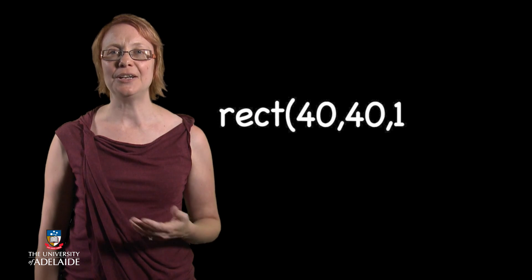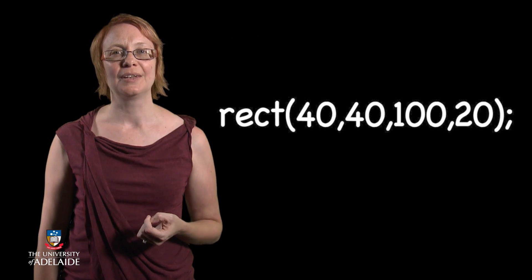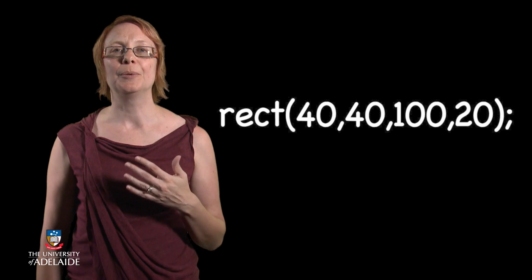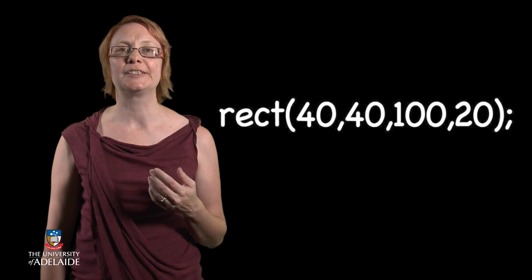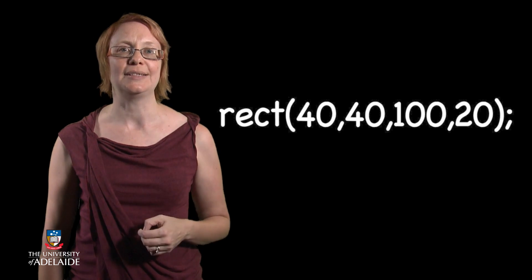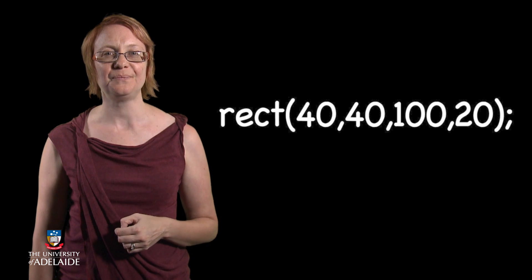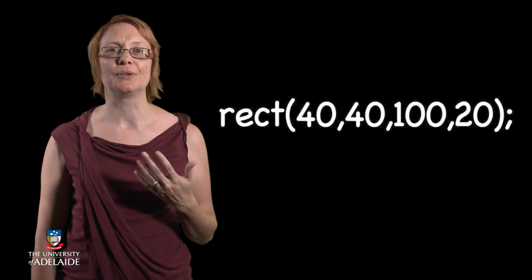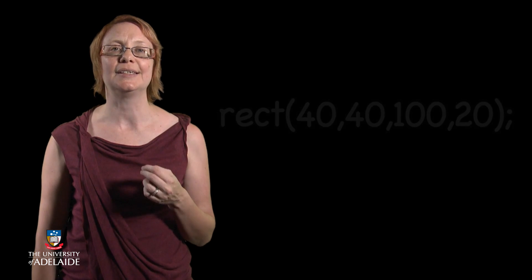You can even specialize what happens when you call the function by providing parameter values. For example, the rect function draws a rectangle on our canvas. We provide the information it needs through the parameter values, which give the starting x and y coordinate values as well as the height and width of the rectangle. This information specializes the call to the rect function so that it does exactly what we need.